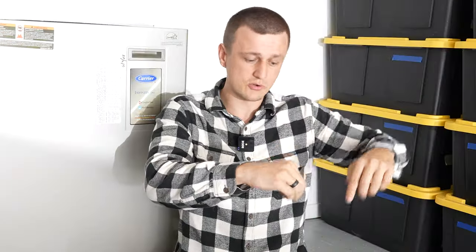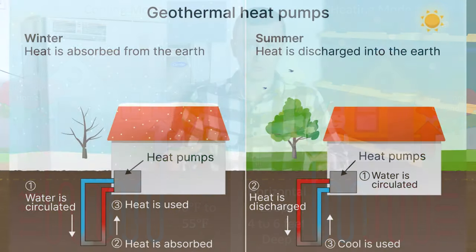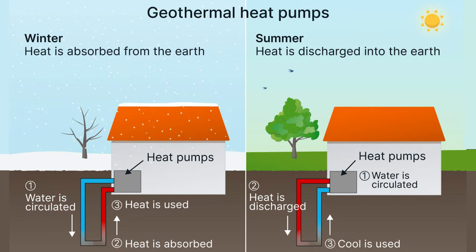Temperatures inside the ground, about 10 feet deep, are usually pretty steady at about 55 degrees Fahrenheit all year round. A geothermal system takes advantage of that and uses the ground temperature instead of the air, which makes things a lot more efficient.